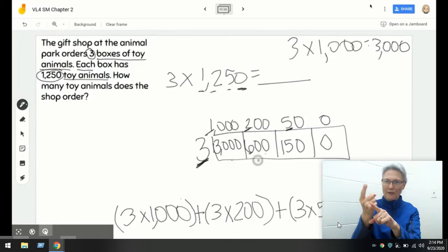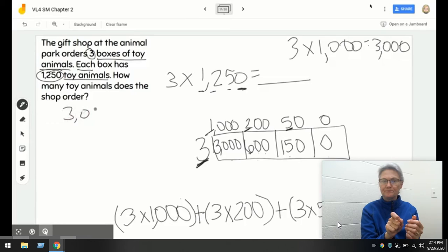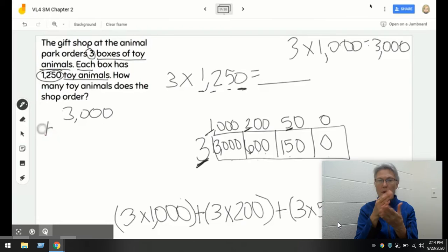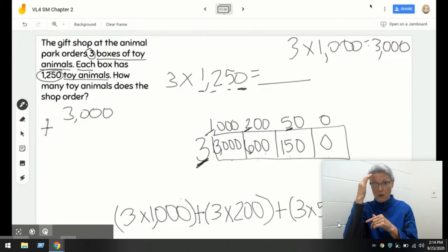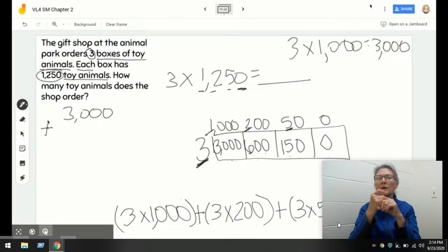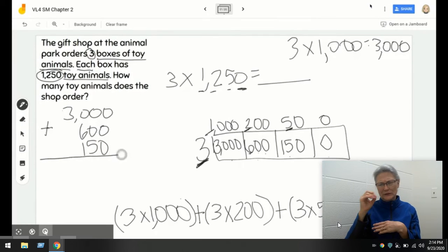Now, I've got all of my partial products that I need to add up. Let me go ahead and just write over here my addition sentence. I need to add up all my partial products. And you guys, I know that when I'm adding and subtracting, it's so important to make sure that my numbers are lined up using place value. So, 600, then we've got 150, and I'm going to leave off my zero.